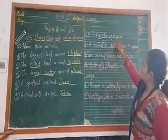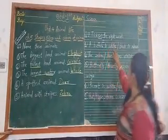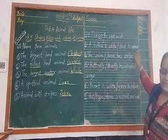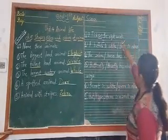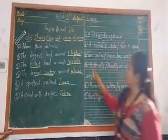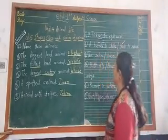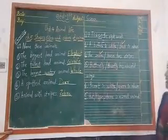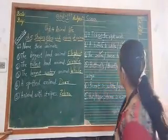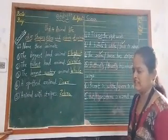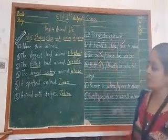Now we shall tick the right word. First number: a buffalo is white or black in color. Buffalo is black in color. Number two: the zebra or horse has strips. Zebra has strips on its body. Number three: butterfly or housefly has colorful wings. Housefly is mostly found near our house, but butterfly has colorful wings. So we tick butterfly.